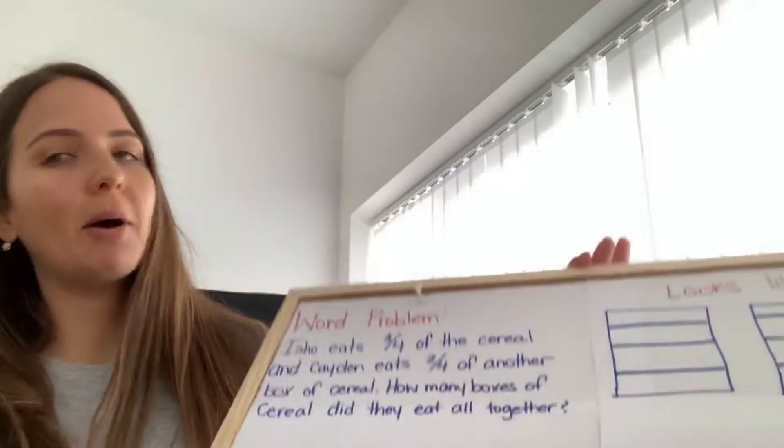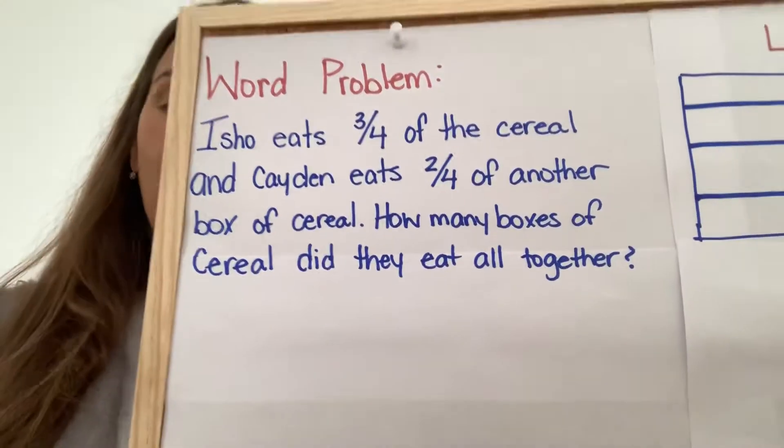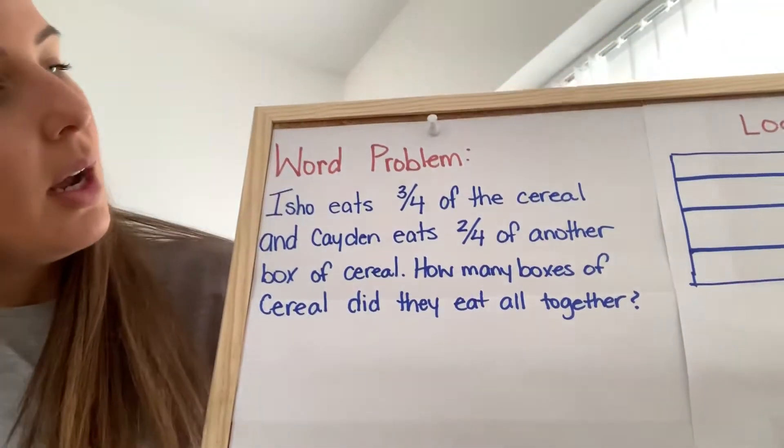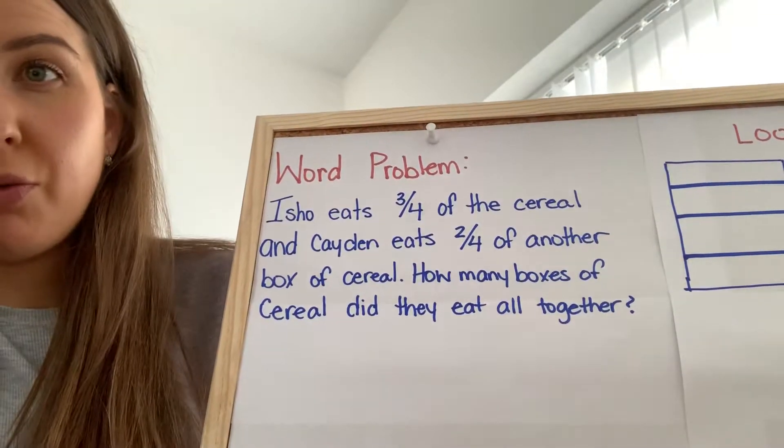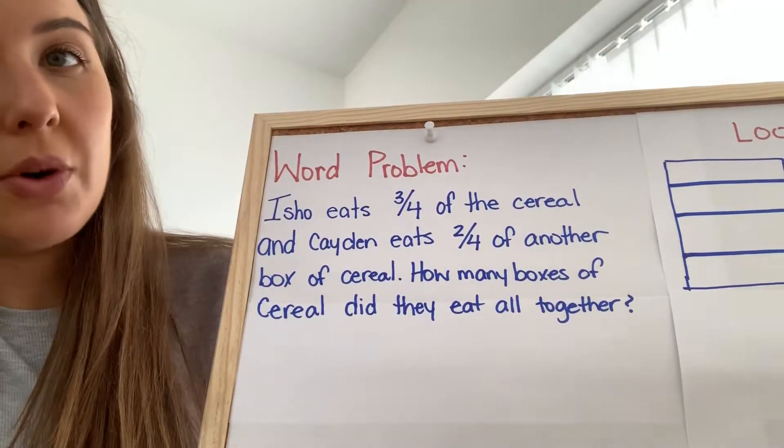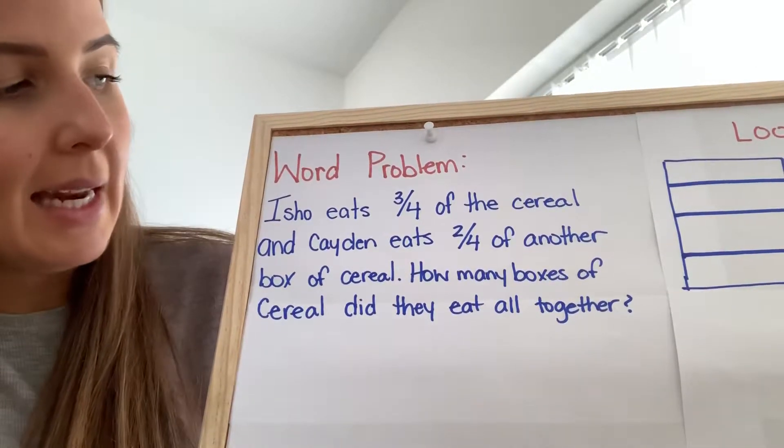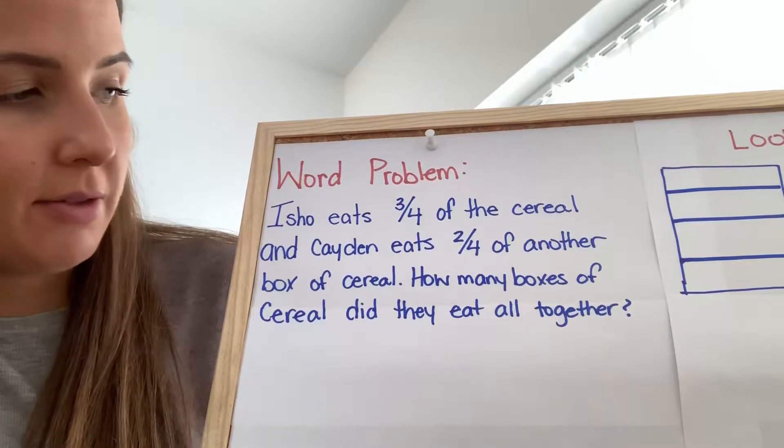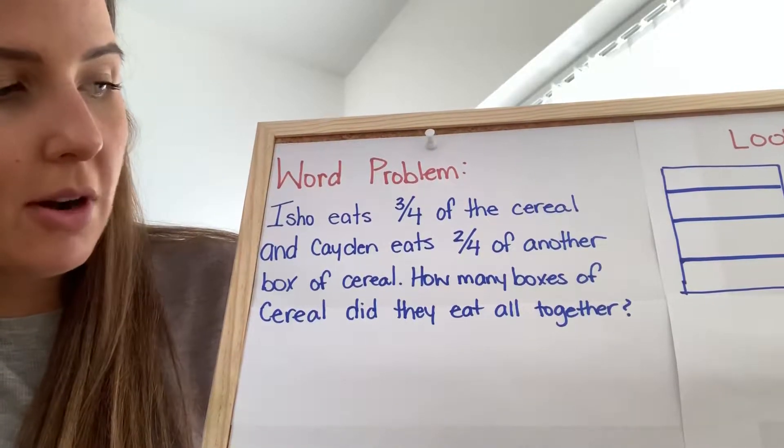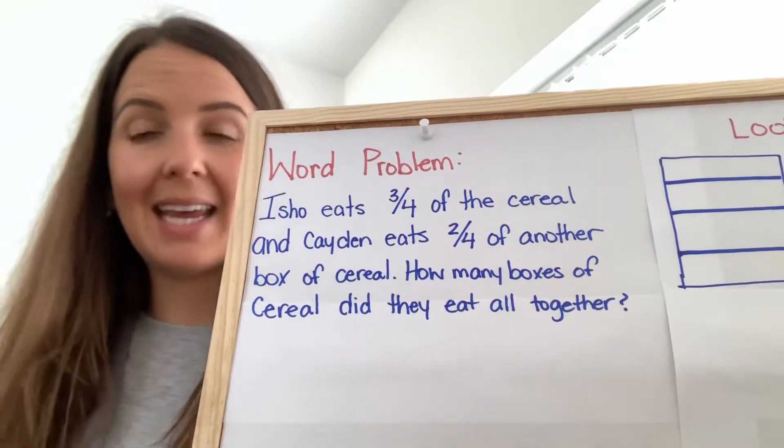Okay, so let's try this. This is new for me. So, I bought this little board here. All right, so word problem. Isho eats three quarters of the cereal and Caden eats two-fourths of another box of cereal. So, how many boxes of cereal did they eat together?